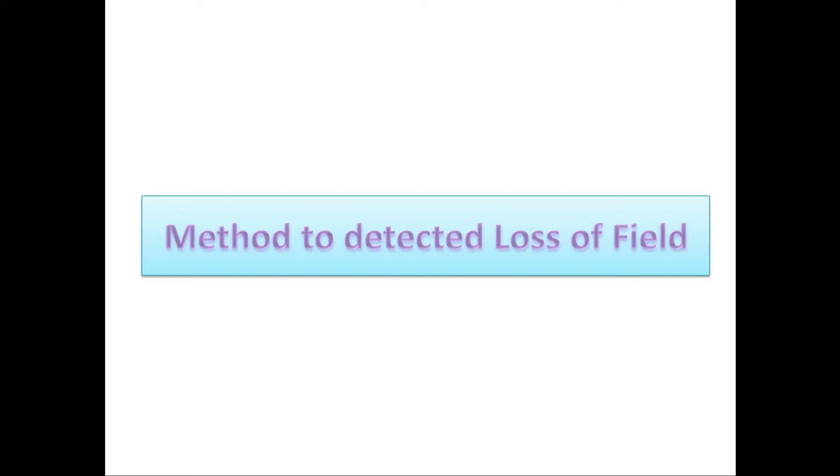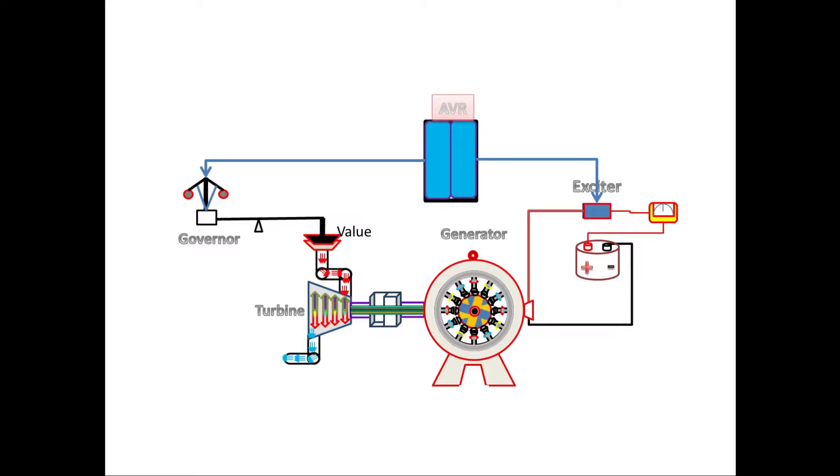Now, we will see what are the ways to find the loss of field while under excitation occurs on generator. First, it is very easy method to detect the loss of field is to check the field current. If the magnetic field is produced on the rotor due to exciter, then definitely there will be a current flow on it.